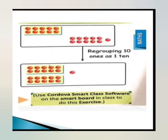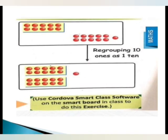Students, aapko yahan pe picture mein do bade rectangles dikh rahe honge. First wale rectangle mein dekho — yellow wale box mein 10 balls hain, aur side mein aur 11 balls diye hue hain. Humne 11 ones ko 2 parts mein split kiya tha — 10 plus 1. Ab hamare paas 10 ke 2 groups honge — 2 tens matlab 20. Aur 1 ball humne extra rakha hai. Aaj humne regrouping ka topic seekha. Next class mein hum isse related exercise karenge. Thank you.